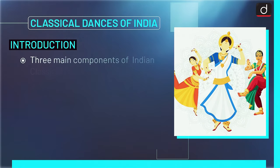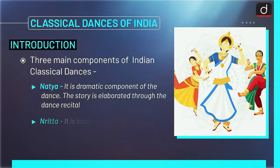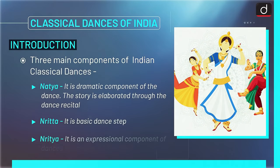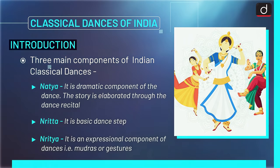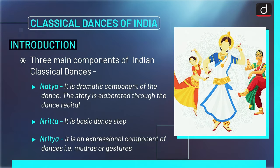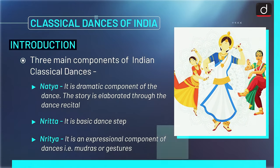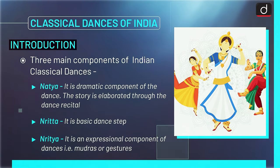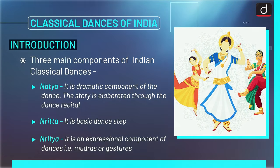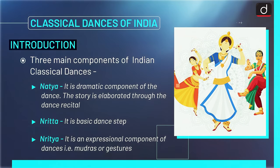Three main components of Indian Classical Dances are as follows. Natya is the dramatic component of the dance, where the story is elaborated through the dance recital. Nritta is a basic dance step. And third, Nritya, which is the expressional component of dance, i.e., Mudras or gestures.